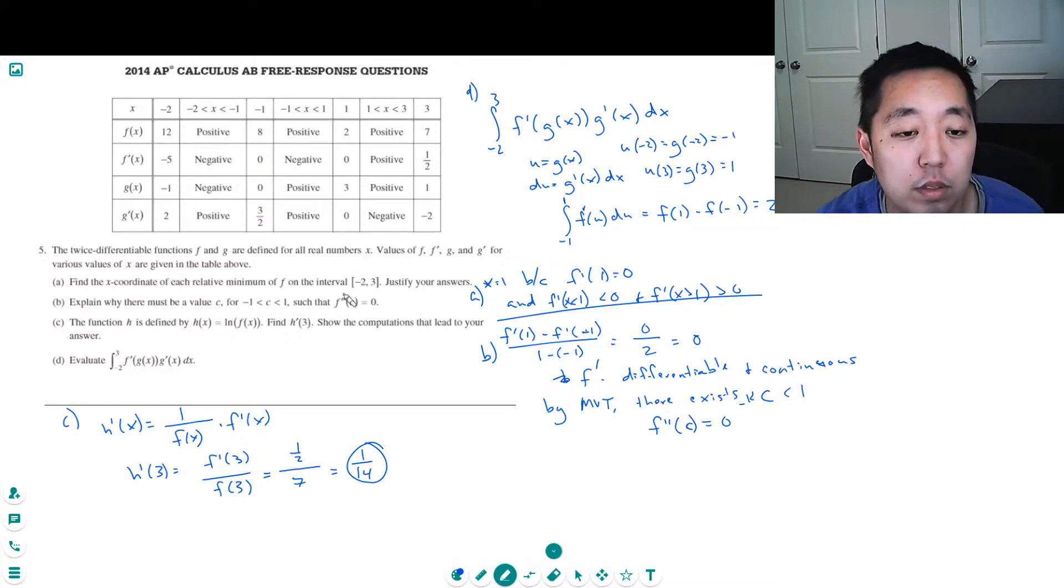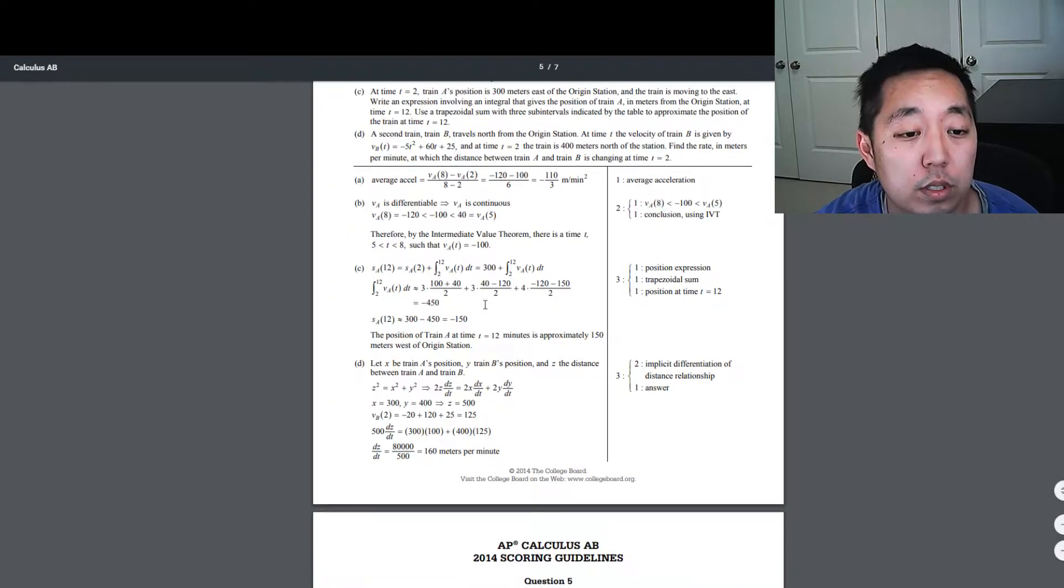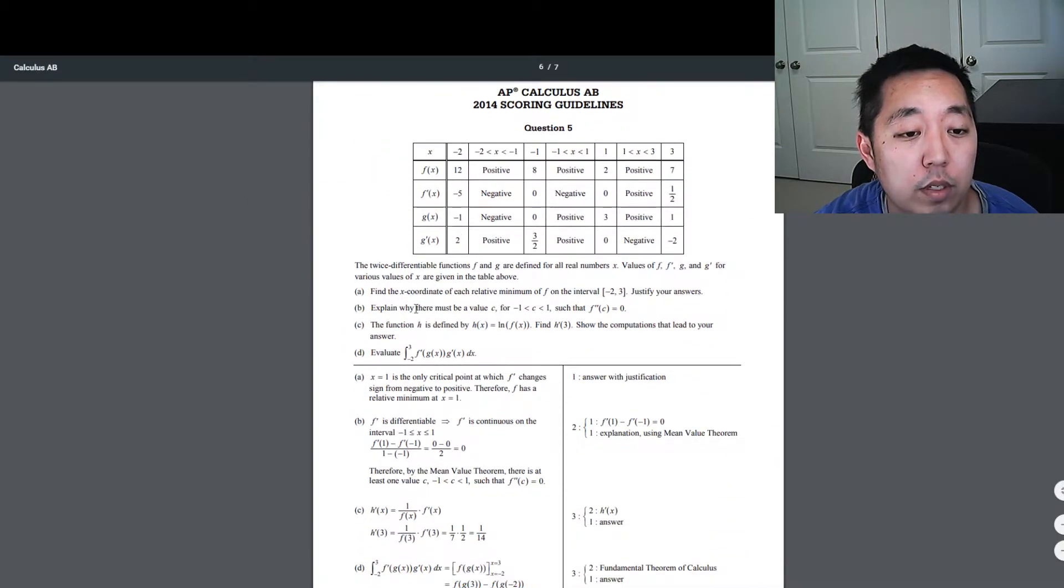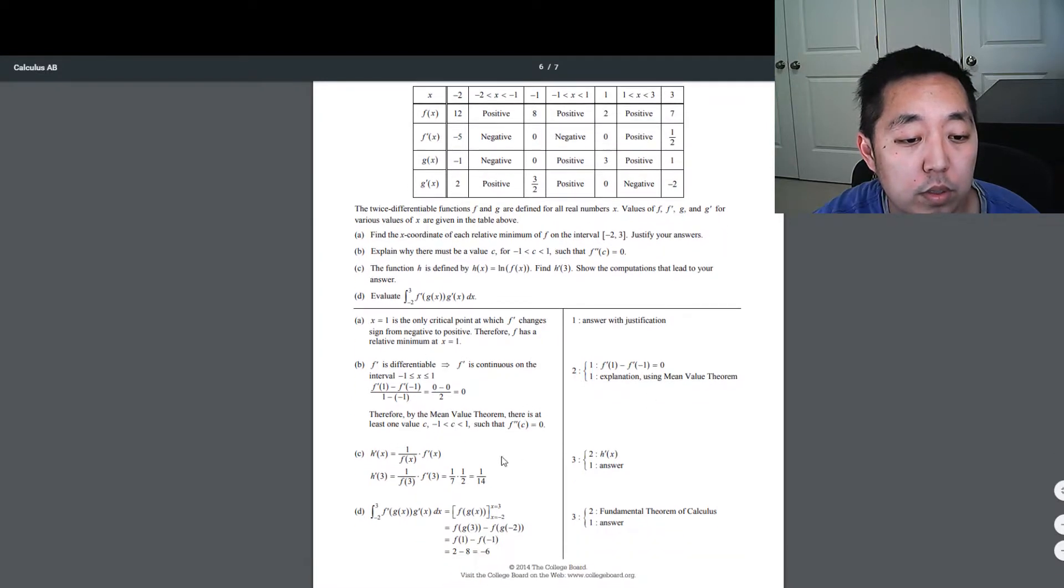Okay, so that's all the parts. Let's see how we look on question 5. x equals 1, negative to positive, therefore a relative minimum. Mean value theorem explanation. 1 over 14 and negative 6. Cool, we're on top of it on this question.